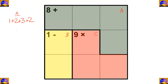In cage B there are two cells and the operation is subtraction — after the operation the result must be one, so the options are three minus two and two minus one. In cage C there are three cells and the operation is multiplication — after multiplying, the result must be nine, so there is only one option which is three times three times one.